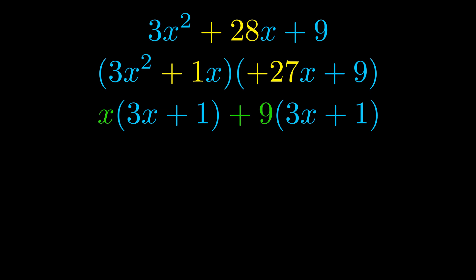Notice also how what remains inside of the parentheses is the same in both cases. The blue values are the same. Those blue values will become one of our factors and we will combine the two green values, the GCFs that we pulled out, to get the other one. And that is our fully factored equation.